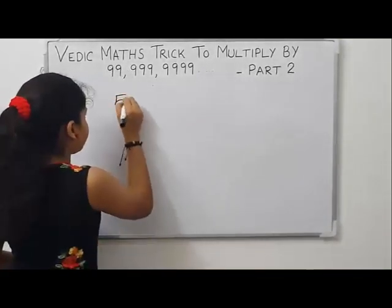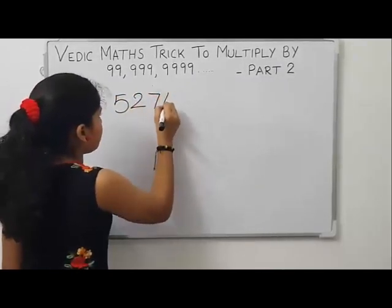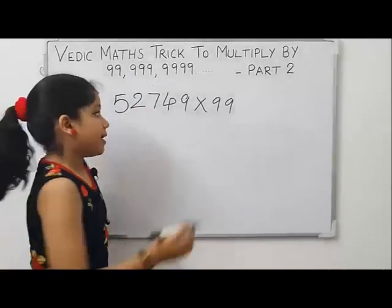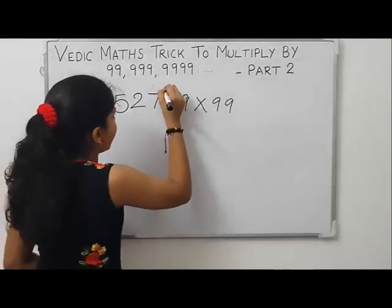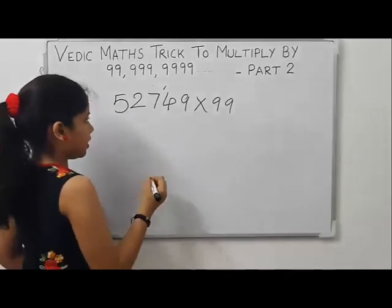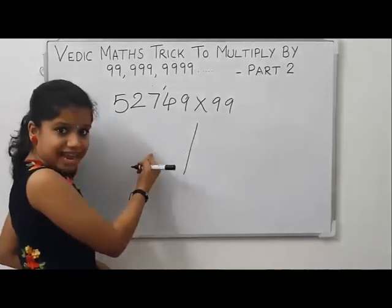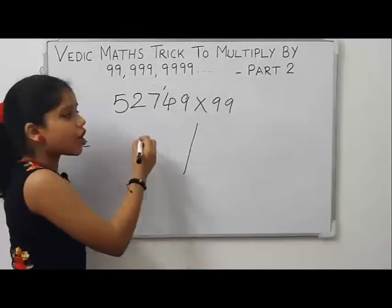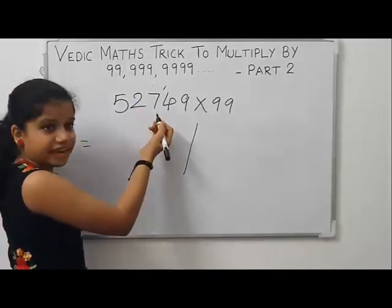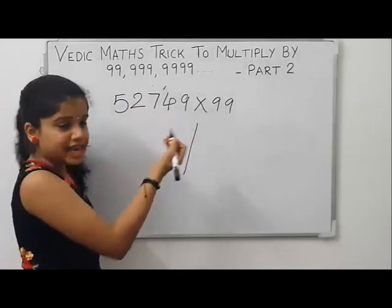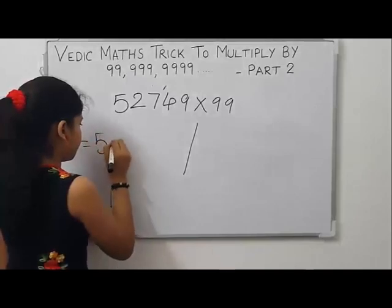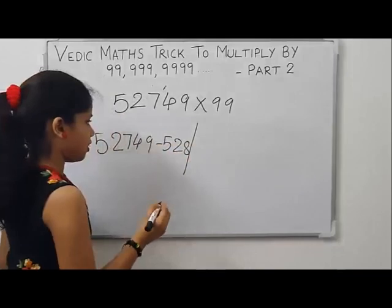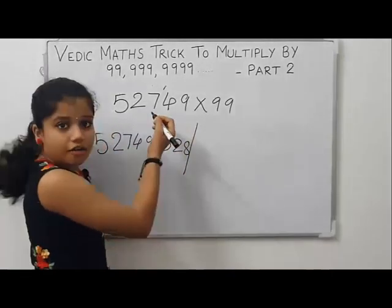Let us take another example: 52749 into 99. Here the number of digits are five but the number of nines are only two. Put a mark here to make the number of digits equal to the number of nines. Now put a partition here to separate the LHS and RHS part. To get the LHS part, subtract the next number of 527 from 52749 — that is 52749 minus 528. To get the right hand side, find the complement of 49.